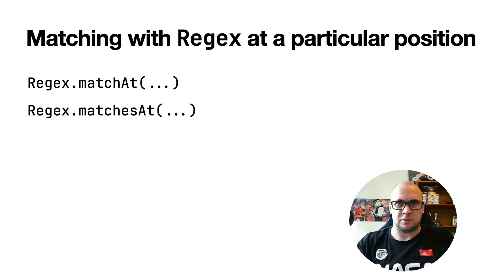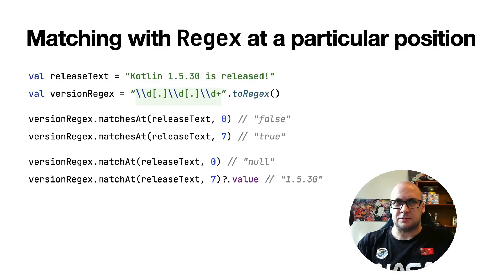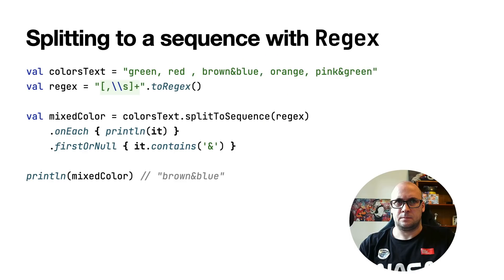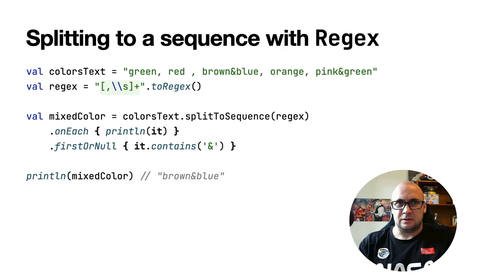There are new experimental functions in the Regex standard library class: matchAt and matchesAt. These functions provide a way to check if a regular expression has an exact match at a particular position in a string or char sequence. The matchesAt function returns a boolean result, while matchAt returns the substring that it matches or null if it can't find a match. We also added splitToSequence, a lazy counterpart of the split function. It splits the string around matches of the given regular expression but returns the result as a sequence, so that all operations on the result are executed lazily.